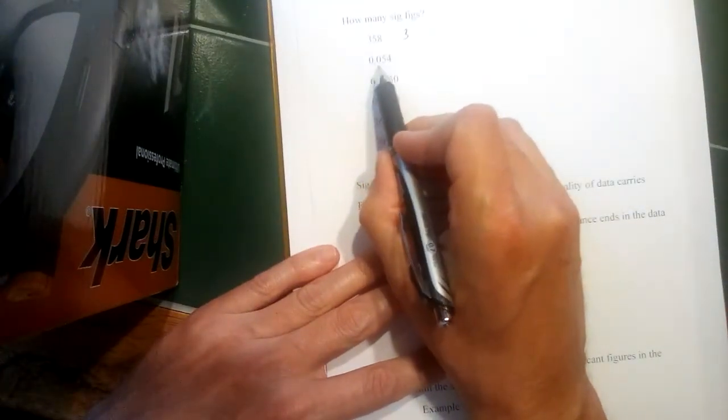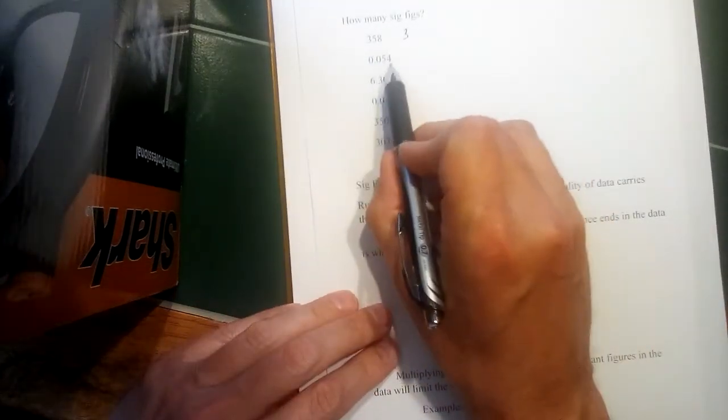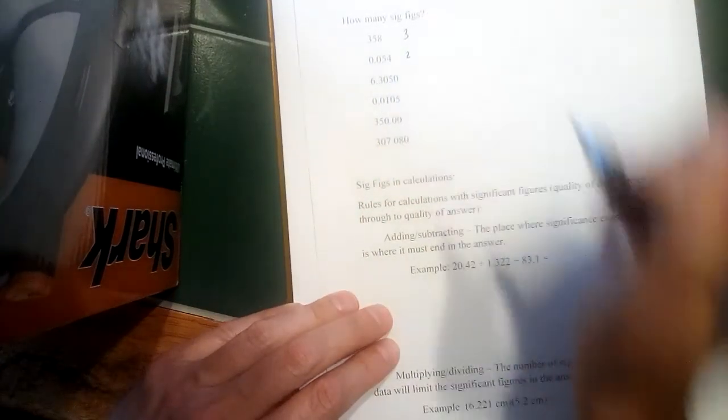0.054, those zeros are to the left. Those are not significant figures, but the five and the four would be. So that is two.